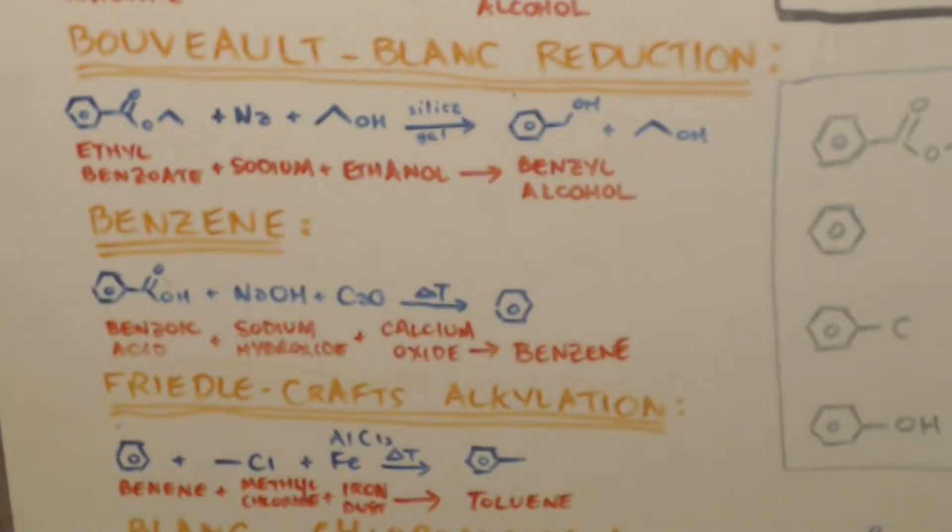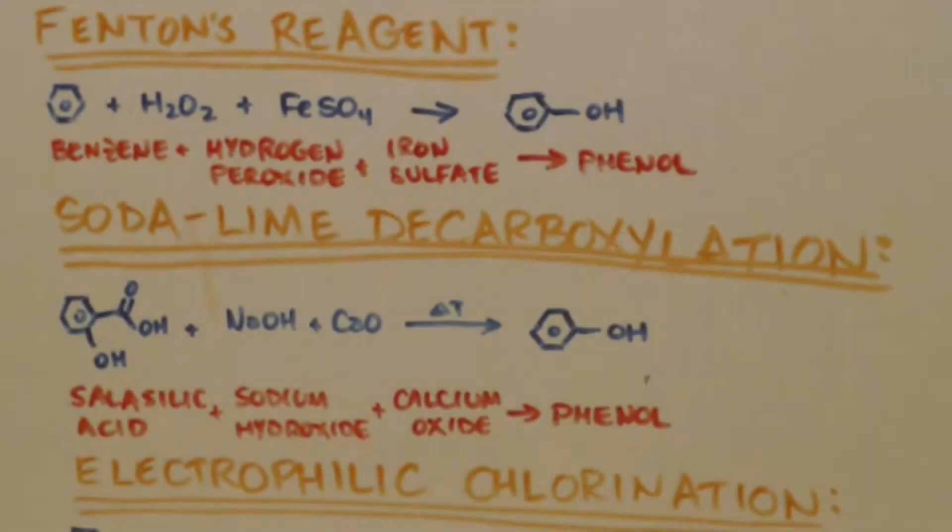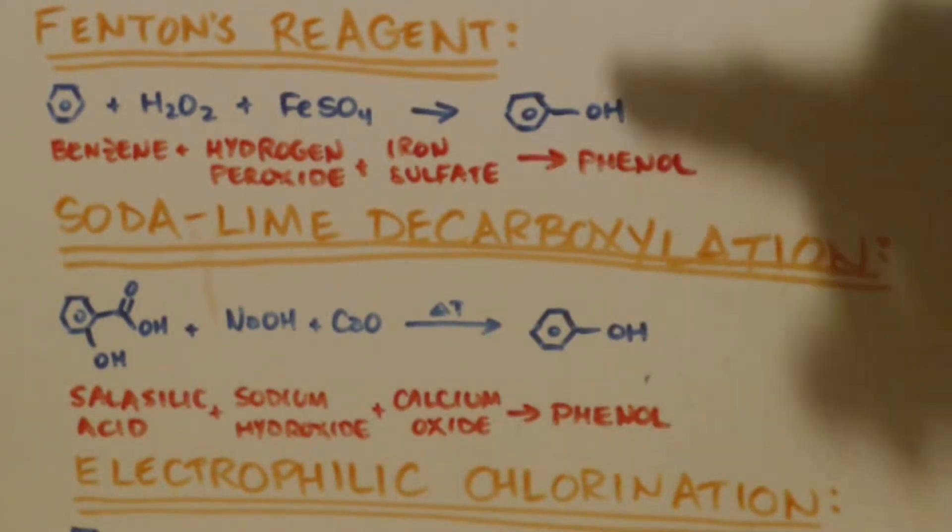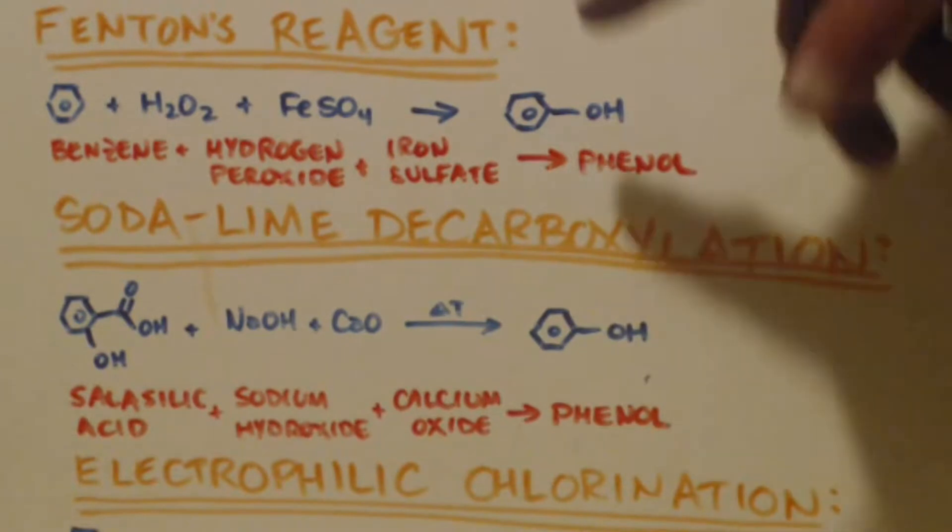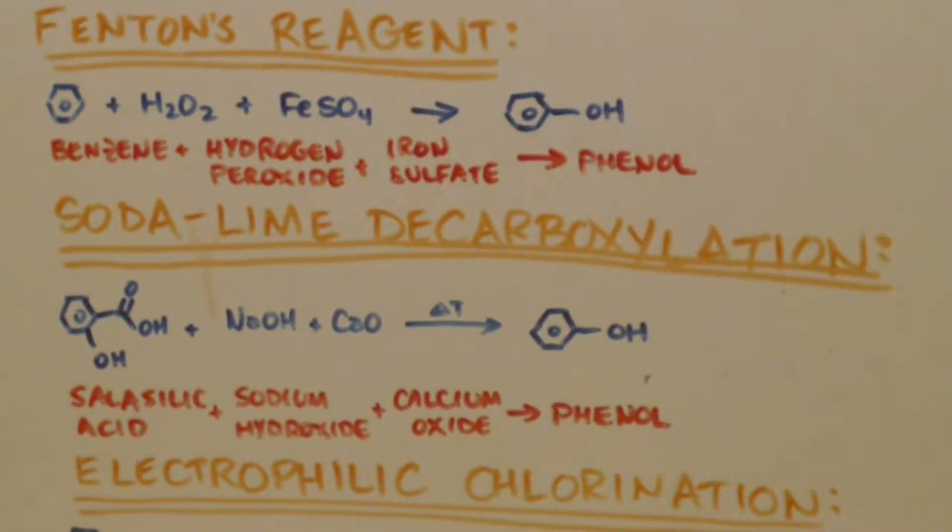Now the next one is phenol. There's two methods that I'm going to show you. One is Fenton's reagent. That's where you take the benzene, and we just made benzene. I just showed you how to make benzene in 30 minutes, and you can make it directly from the food preservative. So anyways, you get benzene, hydrogen peroxide, iron sulfate, and you'll end up with phenol. It's that simple. Now I don't know that reaction really. I have some stuff on my notes, but I've never done that one.